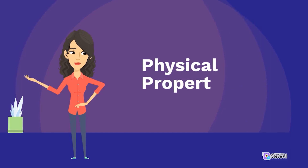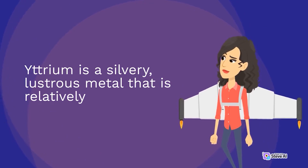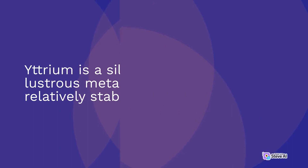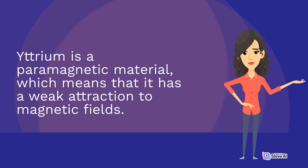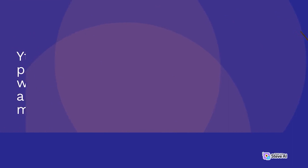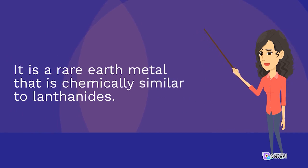Yttrium is a silvery, lustrous metal that is relatively stable in air. It has a melting point of 1522 degrees Celsius and a boiling point of 3338 degrees Celsius. Yttrium is a paramagnetic material, which means that it has a weak attraction to magnetic fields. It is a rare earth metal that is chemically similar to lanthanides.